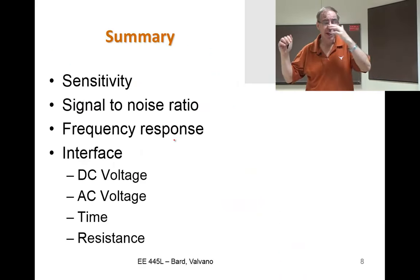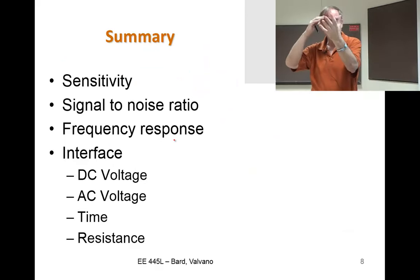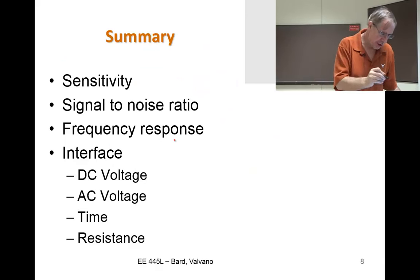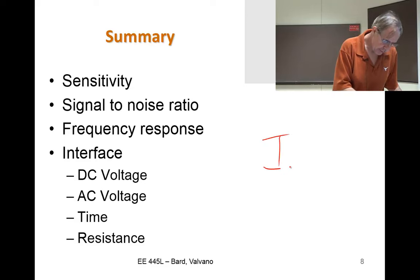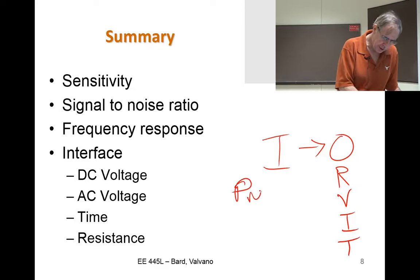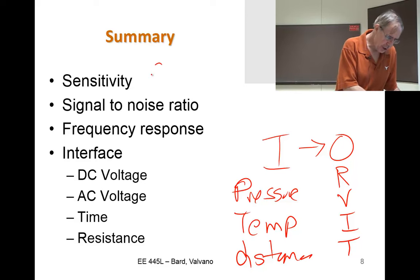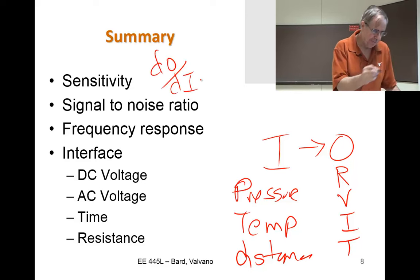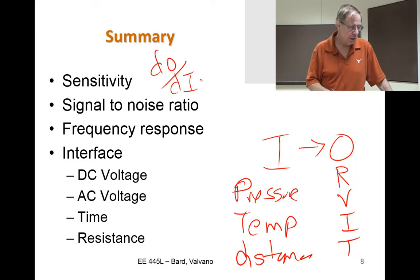So, in summary, the important part about a transducers is the sensitivity. So, we have the input to the output, and the output is either resistance, voltage, current, time, whatever. And the input is either sound pressure, temperature, distance. And this ratio of output to input is the definition of sensitivity.